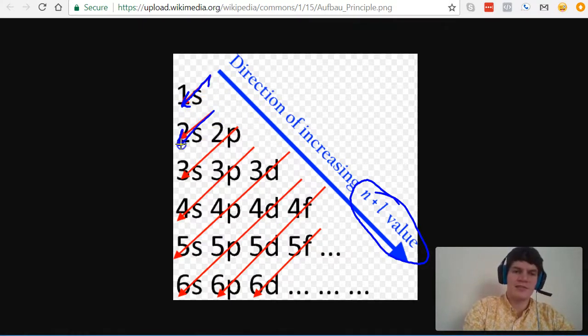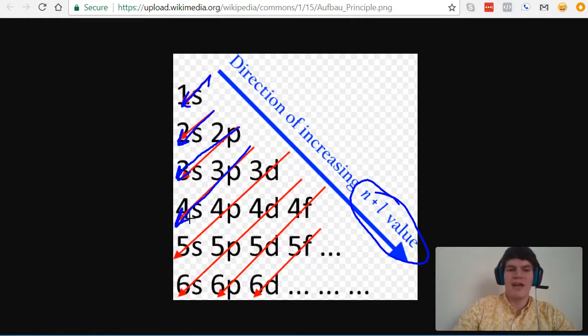n stands for the Principle Quantum Number and l stands for the Angular Momentum Quantum Number. So if you add those two things together, it's going to tell you the relative energy level of that orbital compared to other orbitals. Another way that you can determine which order is going to be taken when you're filling orbitals with electrons, you can use this diagram here. We go to 1s, then we go to 2s, then we go to 2p and then 3s, then 3p and then 4s, and so on and so forth. We can create this diagram by lining them up by their Principle Quantum Number.